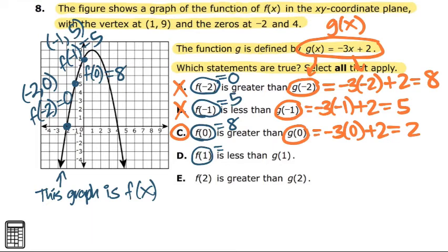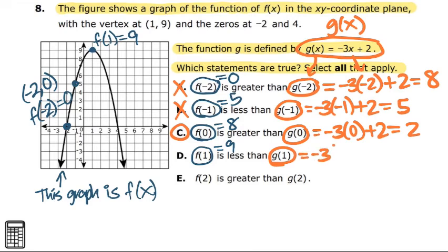Now for letter d. So before I do f of positive 1, you can see that everything is looking a little messy. So I'm going to erase some so I can look at it a little clearer. So f of positive 1 is positive 9. Alright. And we're going to see if 9 is less than g of 1. g of 1 is negative 3 times 1 plus 2. That's going to be negative 1. 9 is definitely not less than negative 1. So on to the next one.